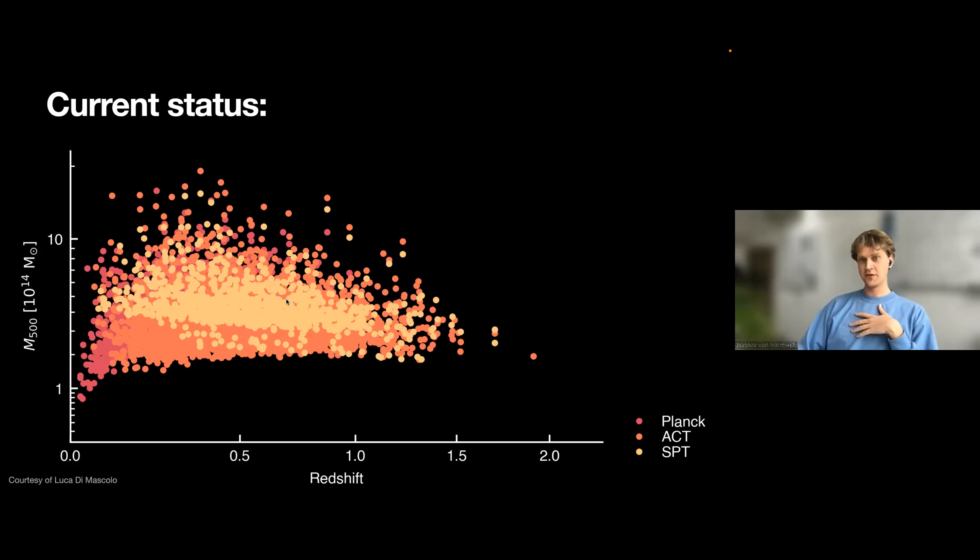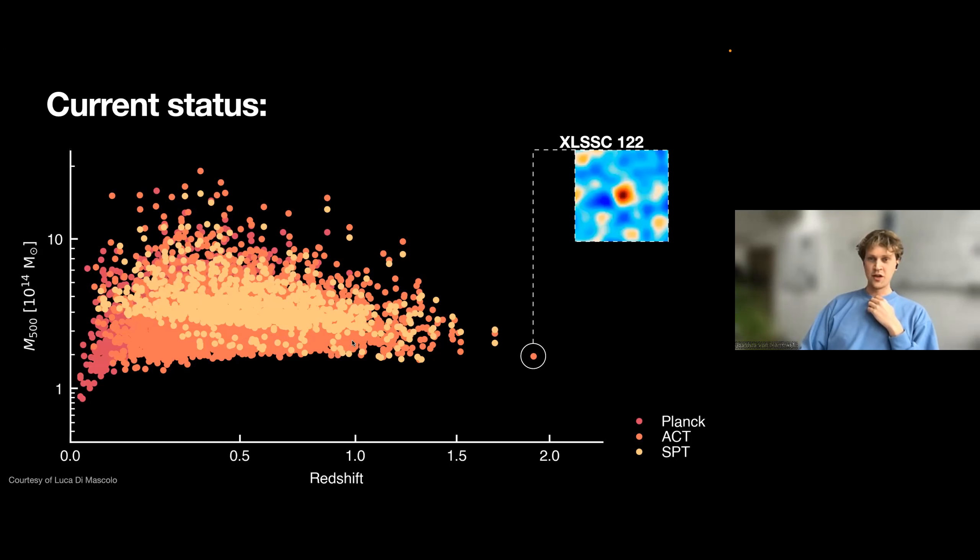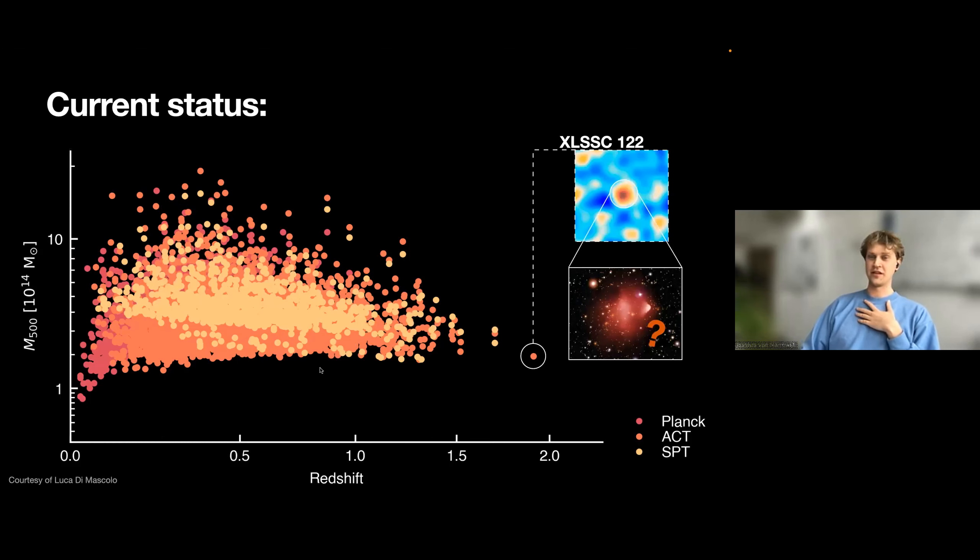If you zoom in on the data by these single-dish telescopes, for instance ACT, and I want to use XLSSC here as an example, all these clusters are just single blobs. The beam is one arc minute, and all the magic is actually hidden within a single beam.